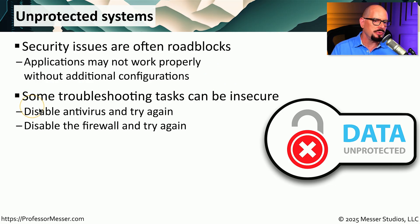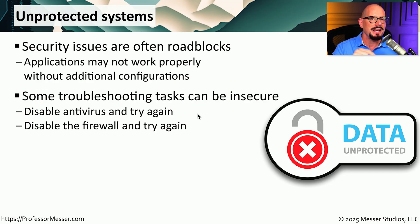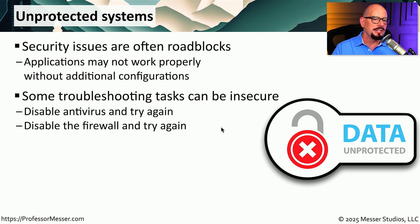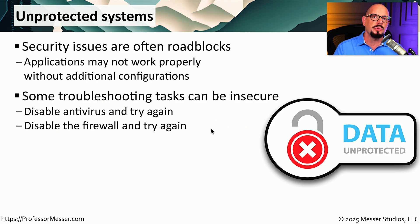For example, you may need to disable antivirus during troubleshooting to make sure that it's not antivirus that's causing the problem. Or maybe we need to disable our personal firewall and see if that's causing the communications problem we are experiencing. What we have to remember is at the end of our troubleshooting task to make sure that we have re-enabled antivirus, re-enabled our firewall, or that we have an automated process in place to automatically re-enable those security tools.